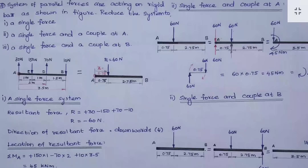Let us read the question. A system of parallel forces are acting on a rigid bar AB as shown in the figure. Here parallel forces are acting — all the forces' lines of action are parallel. Four forces are acting on it as shown in the figure.